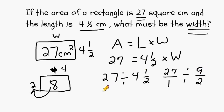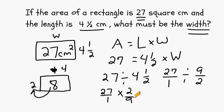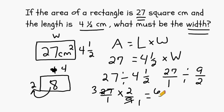The second step is to keep the first fraction the same, change the division sign to multiplication, and write the reciprocal of 9 halves, which would be 2 ninths. Next I am going to use cancellation to reduce this problem, and I can see that 9 can go into 27 and into 9. 9 goes into 9 exactly one time, and 9 can be divided into 27 a total of 3 times. That leaves us with 3 times 2 for the numerator, which gives us 6, and for the denominator we have 1 times 1, which is 1. And 6 over 1 may be expressed as 6 wholes.